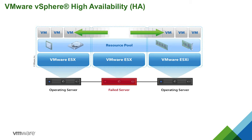HA provides failover protection against hardware and operating system outages by monitoring hosts and virtual machines to detect hardware and guest OS failures. It will restart virtual machines on other vSphere hosts in your vCloud Air cluster, without manual intervention.